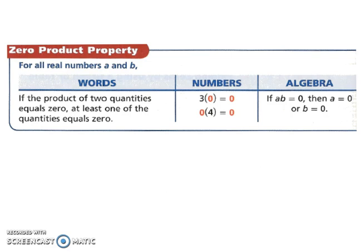Let's look at the zero product property. If the product of two quantities equals 0, at least one of the quantities equals 0. So 3 times 0, or 0 times 4, you're going to get 0. One of them has to be 0 for this to work, or at least one of them.